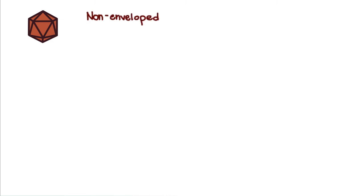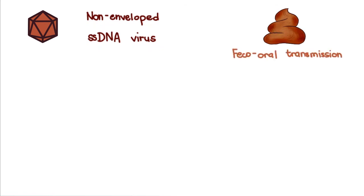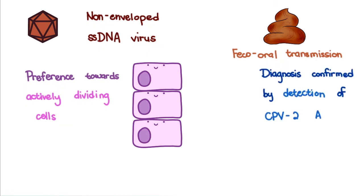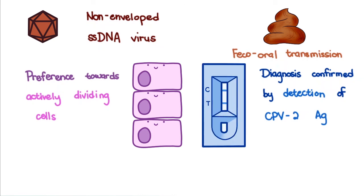To summarize: canine parvovirus is a non-enveloped, single-stranded DNA virus capable of infecting many members of the order Carnivora, but those in the family Canidae are most susceptible. It is highly contagious and is transmitted feco-orally. Being a member of the family Parvoviridae, it has a preference towards actively dividing cells, such as those in the small intestinal crypt epithelium, lymphopoietic and hematopoietic organs, and the myocardial tissue of developing puppies. The parvo smell is often suggestive, but diagnosis is confirmed by detection of canine parvovirus antigen through immunoassay kits and other diagnostic tools. Treatment involves fluid therapy and supportive care.